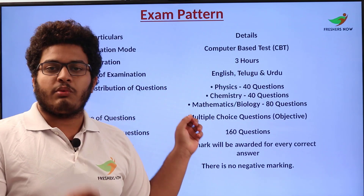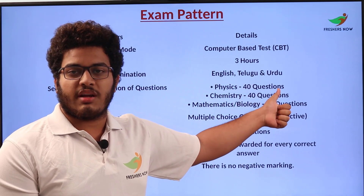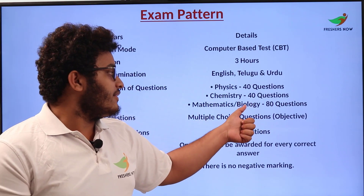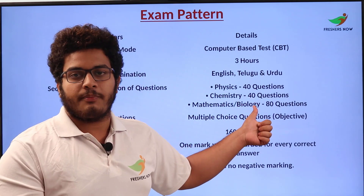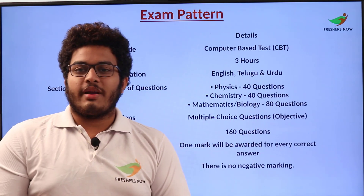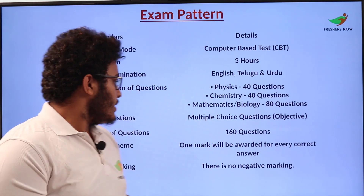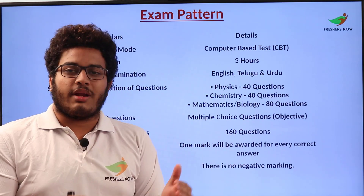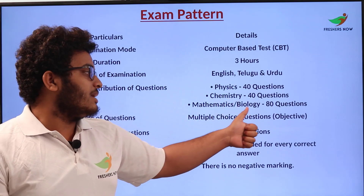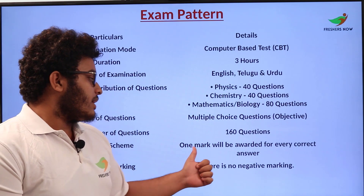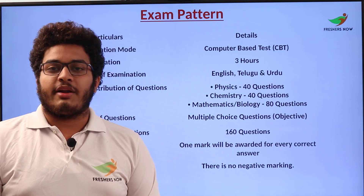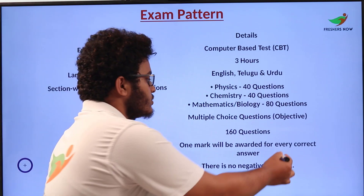The exam has 3 sections: Physics with 40 questions, Chemistry with 40 questions, and Biology with 80 questions. The type of questions are Multiple Choice Questions (MCQ). The total number of questions in the question paper is 160 — Physics 40, Chemistry 40, and Biology 80. Marking scheme: one mark is awarded for every correct answer. There is no negative marking for wrong answers.